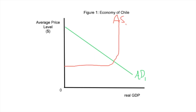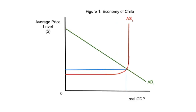That's the Keynesian model right there. Make sure you always label that AS1 and AD1. The reason you always want AS1 and AD1 is that in case one of these shifts, you're already prepared to have AD2 or AS2. So there it is: you've got AS1 up there, AD1 down here, the economy of Chile, real GDP, zero, average price level, and a currency. This should be P1 right there and Q1. And there you have it.